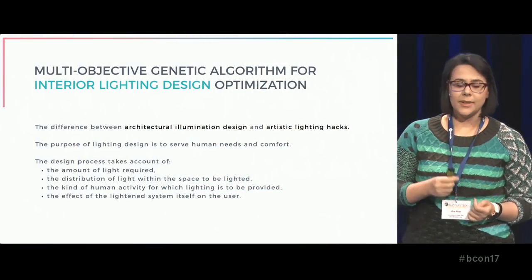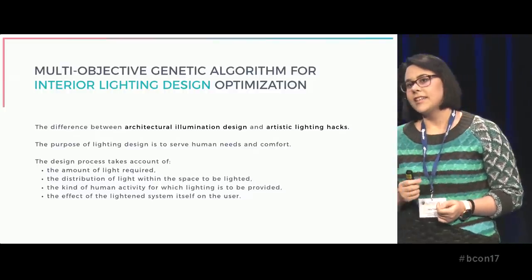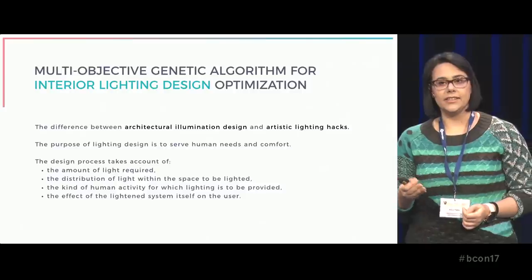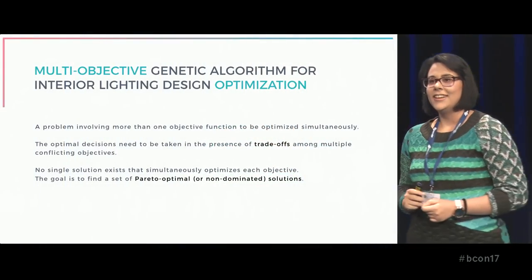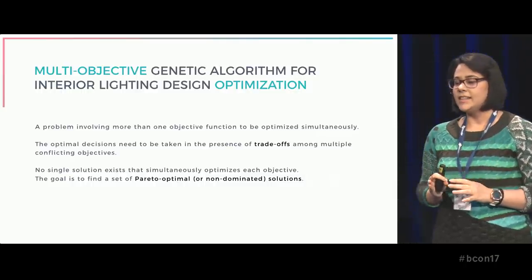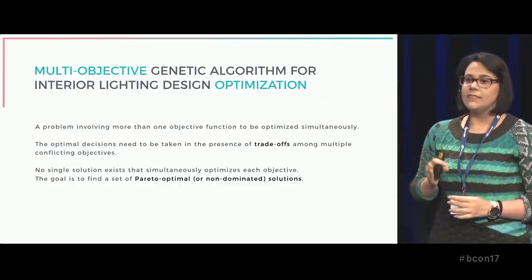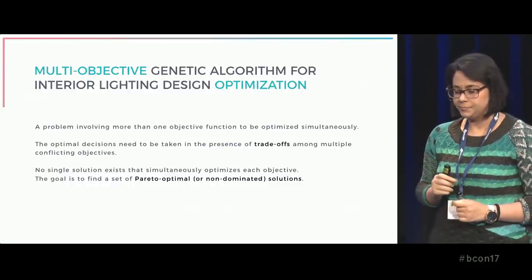The design process should take into account several aspects, like, for example, the type of occupants and their activities in the interior environment. Interior lighting design can be seen as an optimization problem that involves more than one objective. The optimal lighting configuration is the result of the best trade-off between multiple conflicting criteria, such as the lighting quality, the energy cost, and so on.